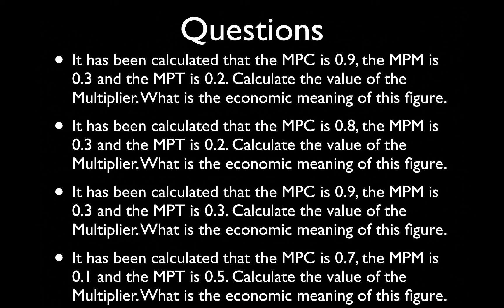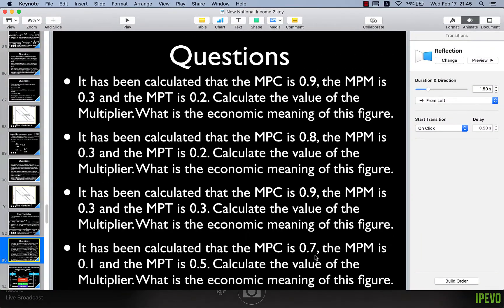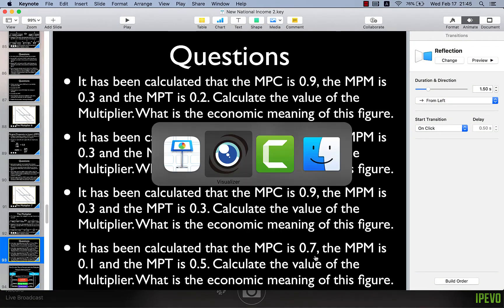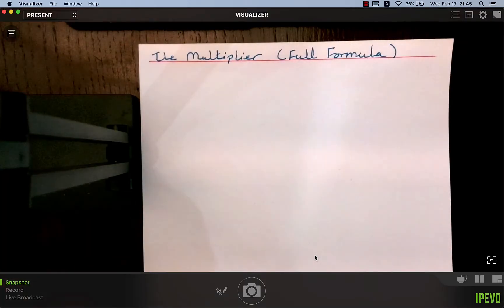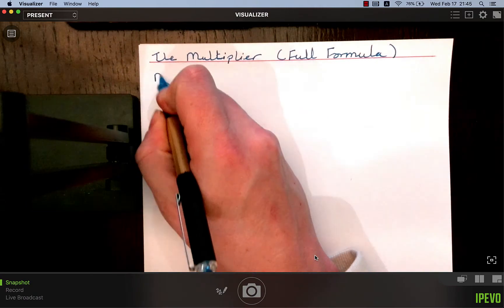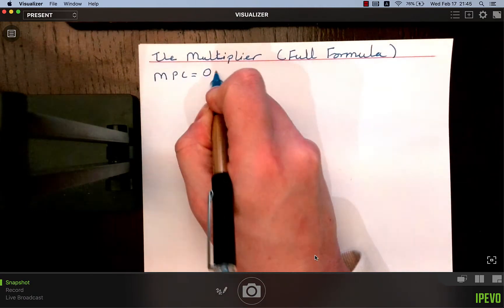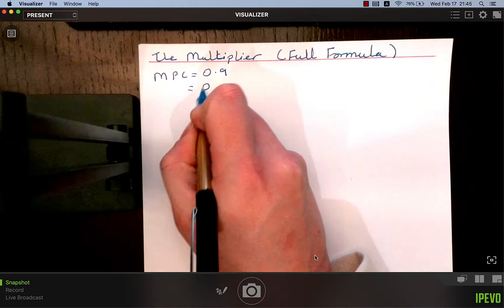As always, please take a photo so we can refer back to this. The first question: it has been calculated that the MPC is 0.9, the MPM is 0.3, and the MPT is 0.2. So let's write this out here. The MPC equals 0.9, MPT is 0.2, and MPM is 0.3.